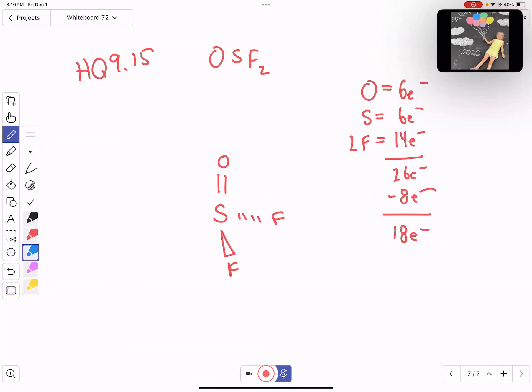We're going to fill the octet of fluorine. So there's one, two, three, four, five, six, seven, eight, nine, ten, eleven, twelve. Fill the octet of oxygen as well.